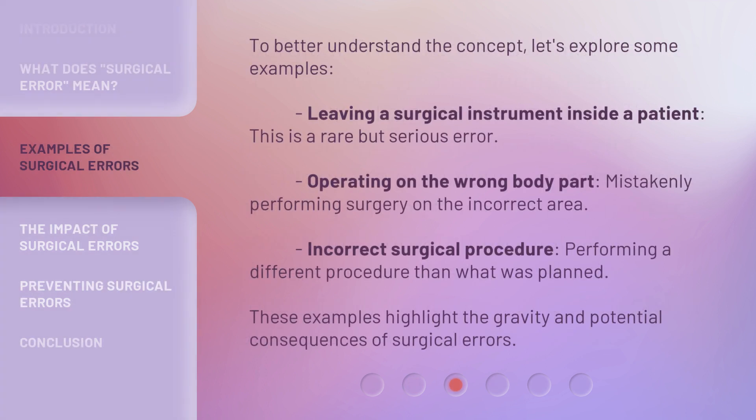To better understand the concept, let's explore some examples. Leaving a surgical instrument inside a patient — this is a rare but serious error. Operating on the wrong body part — mistakenly performing surgery on the incorrect area. Incorrect surgical procedure — performing a different procedure than what was planned. These examples highlight the gravity and potential consequences of surgical errors.